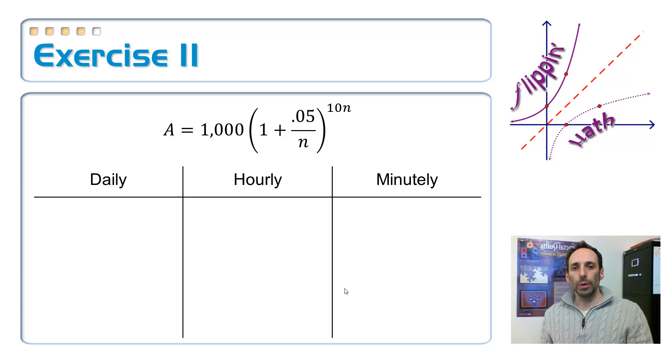So on the daily rate, n value, of course, is going to be 365. Plug that in there, and I get $1,648.66. Okay. So that's if it's compounded daily.